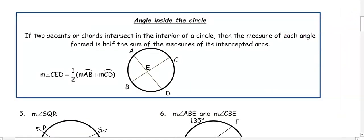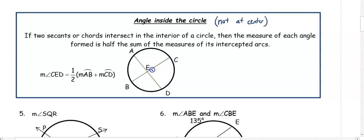Now let's look at angles that are inside the circle — not at the center, because that would be a central angle. When two secants or chords intersect in the interior of a circle, the measure of each angle formed is half the sum of the intercepted arcs. For example, looking at angle CED, it intercepts arcs AB and CD. If AB is 70 degrees and CD is 100 degrees, adding them and dividing by two gives us an angle of 85 degrees.